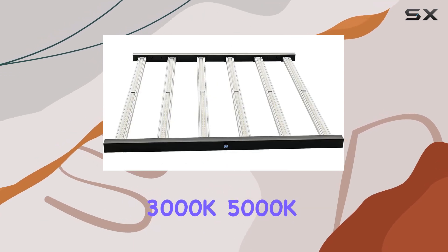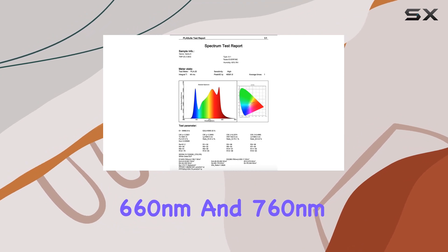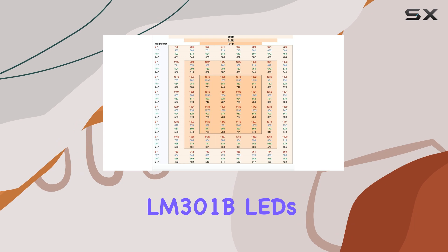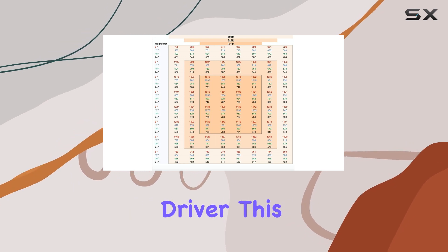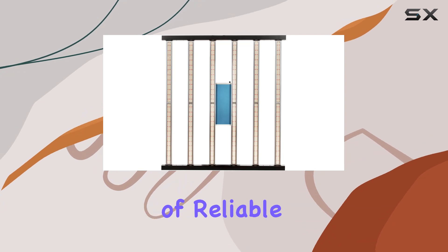Including 3000K, 5000K, 660nm, and 760nm IR. With its industry-leading LM301B LEDs and Inventronics driver, this grow light guarantees over 100,000 hours of reliable performance.